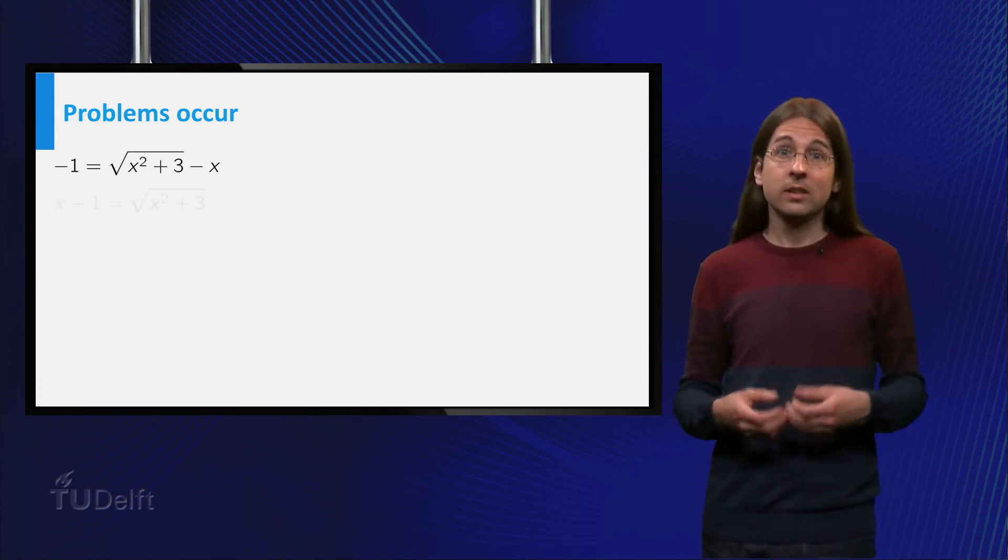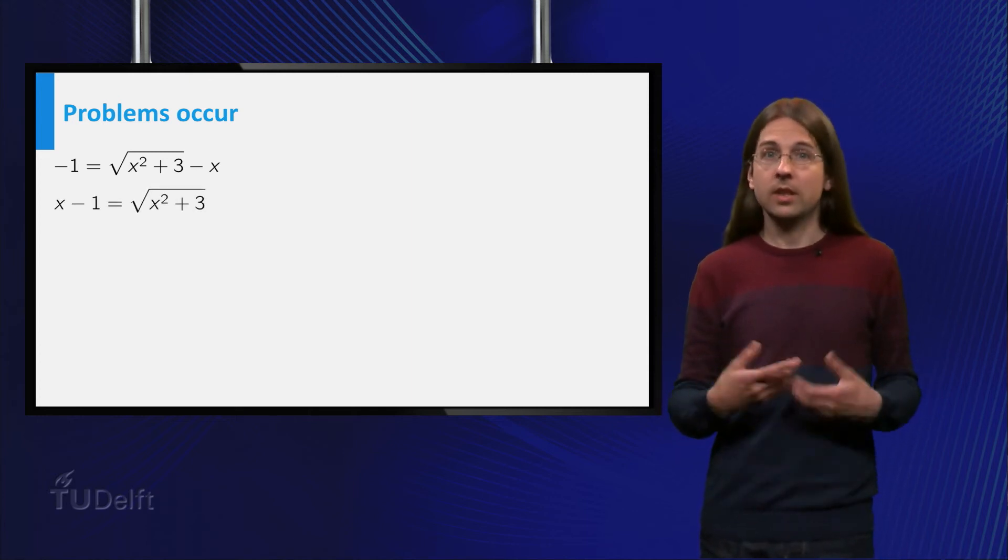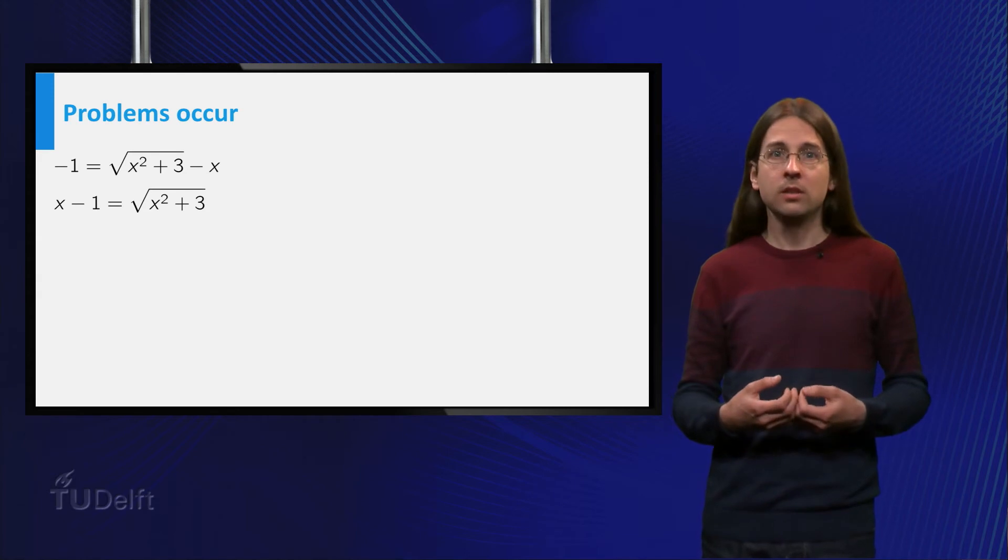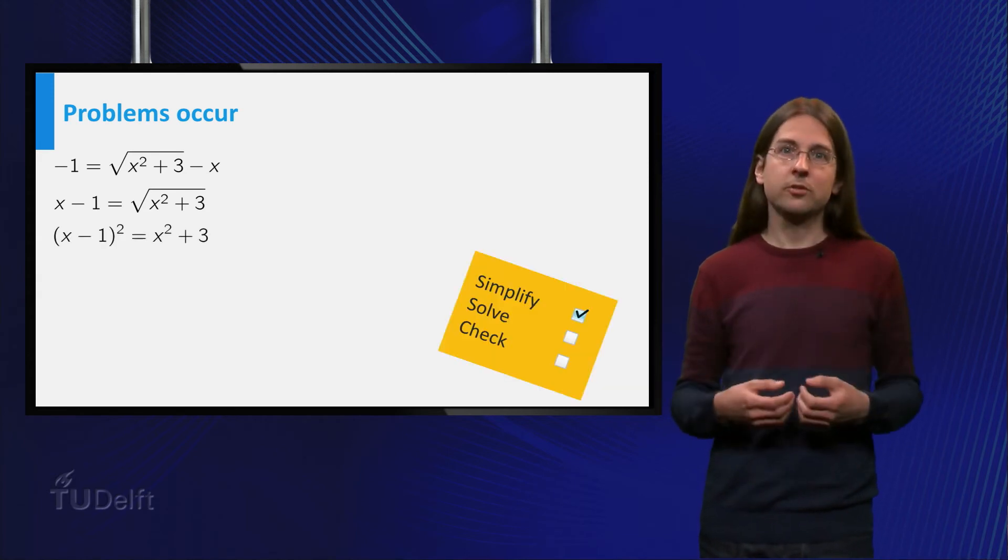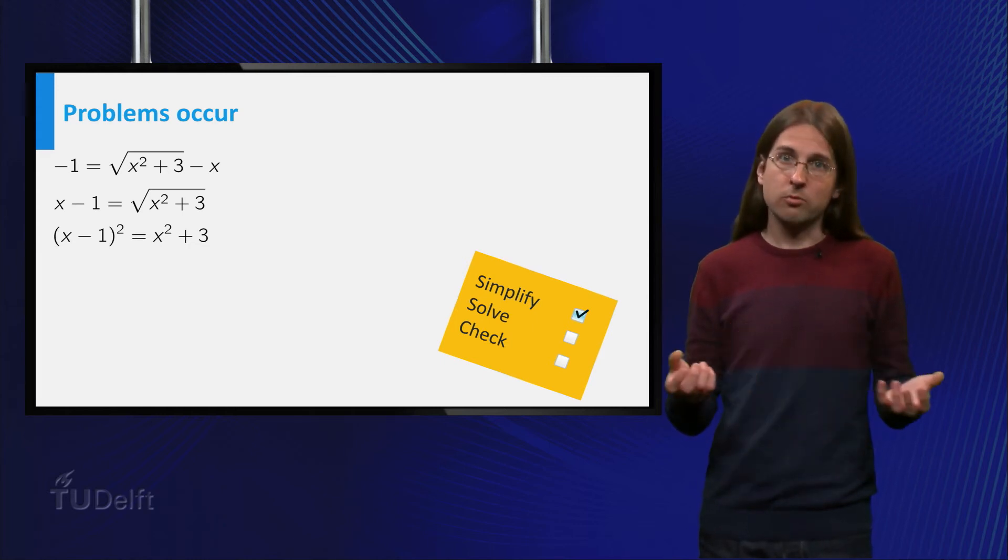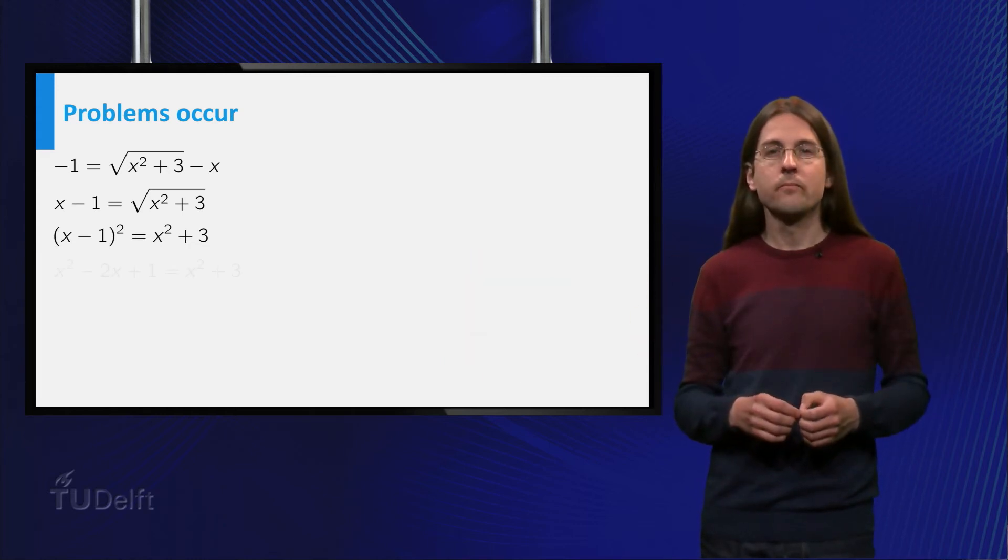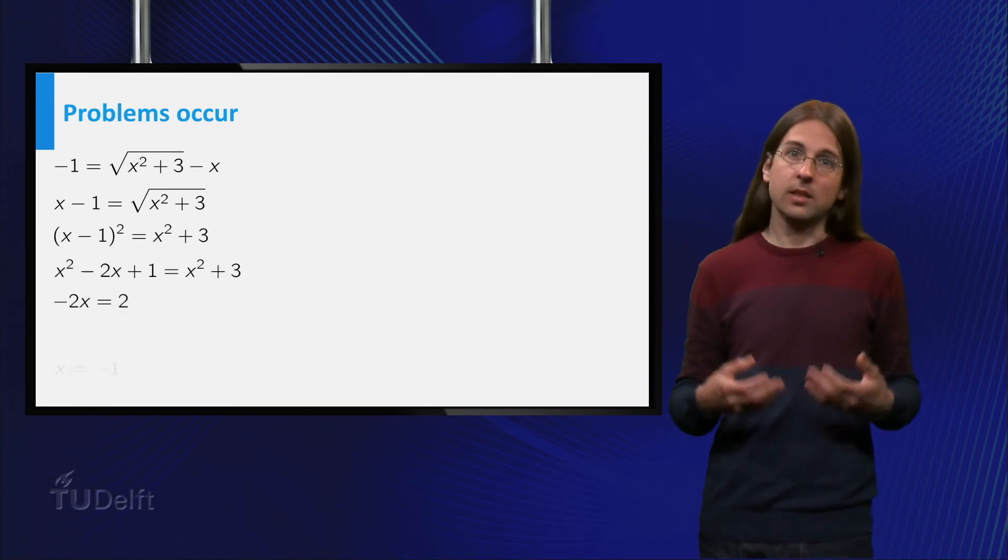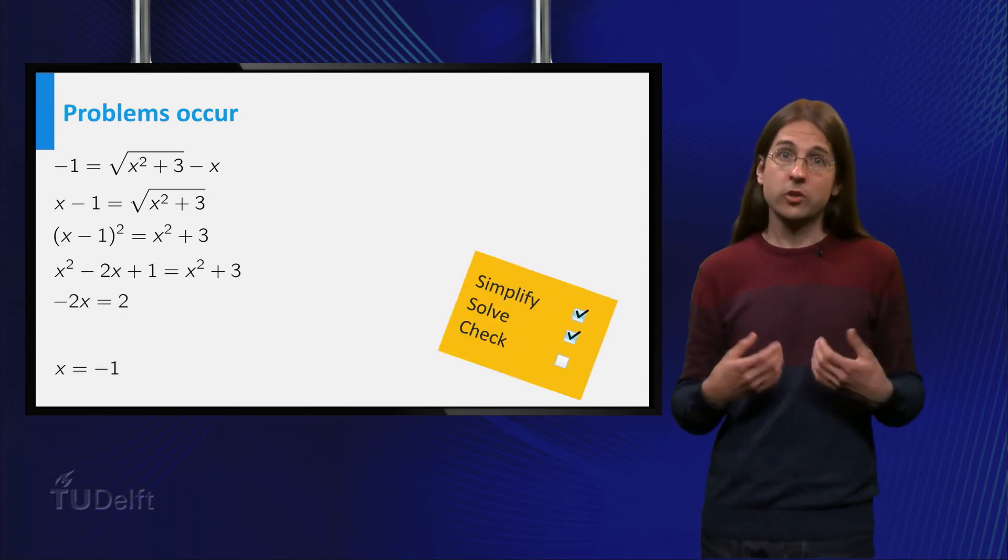Isolating the square, this becomes x minus 1 equals the square root of x squared plus 3. Squaring both sides gives x minus 1 squared equals x squared plus 3. And the square root is gone. Expanding brackets and bringing everything to one side shows x equals minus 1 again.